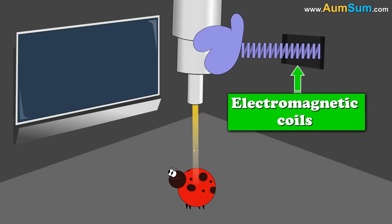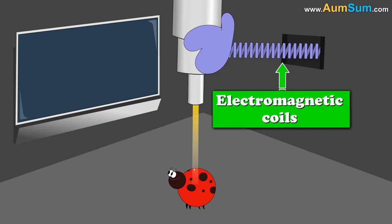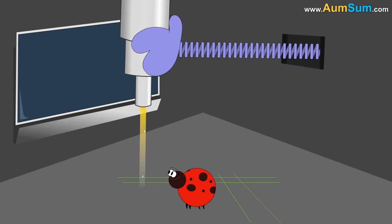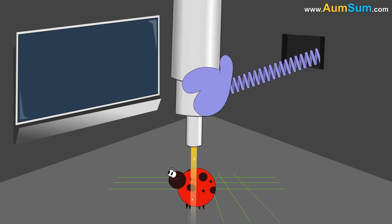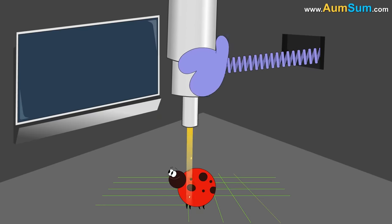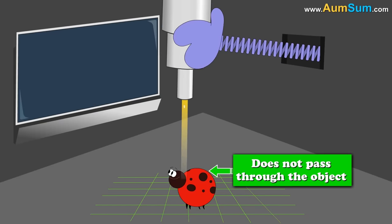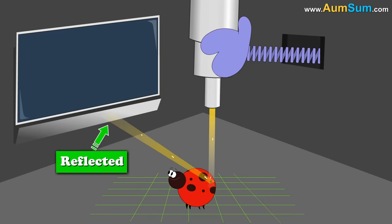Scanning electron microscope consists of a series of electromagnetic coils. These coils can pull the electron beam back as well as forth. They systematically scan the entire surface of the object. This electron beam does not pass through the object. Rather, it is reflected off its surface.